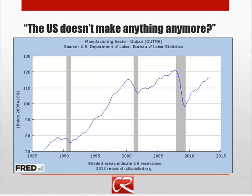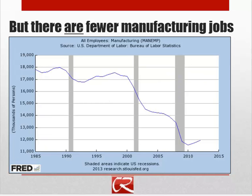Essentially, that's what's going on with manufacturing. Manufacturing productivity continues to grow, and rather than taking that as more and more manufactured goods, we're mostly taking it as a similar — maybe slightly greater — amount of manufactured goods, while moving people into service occupations. And service occupations aren't just flipping burgers — that includes people performing healthcare, legal services, web design, and so on. All of those are service occupations.